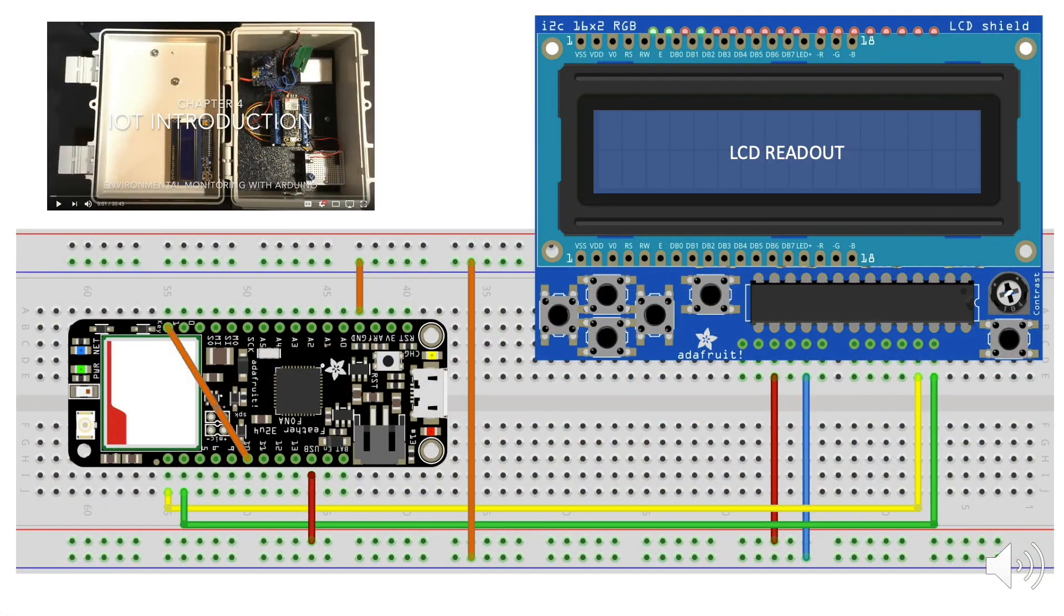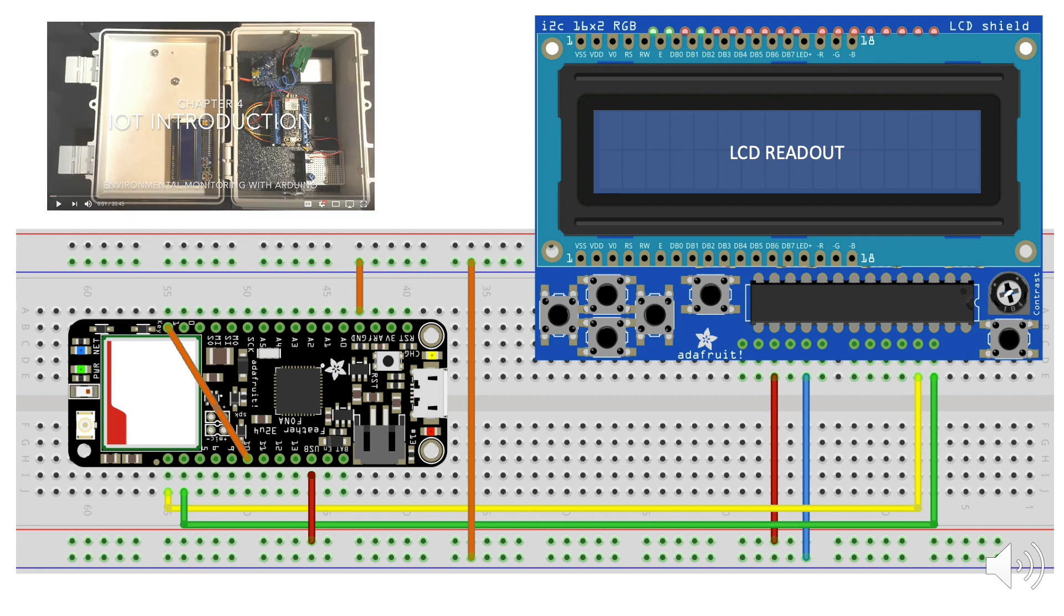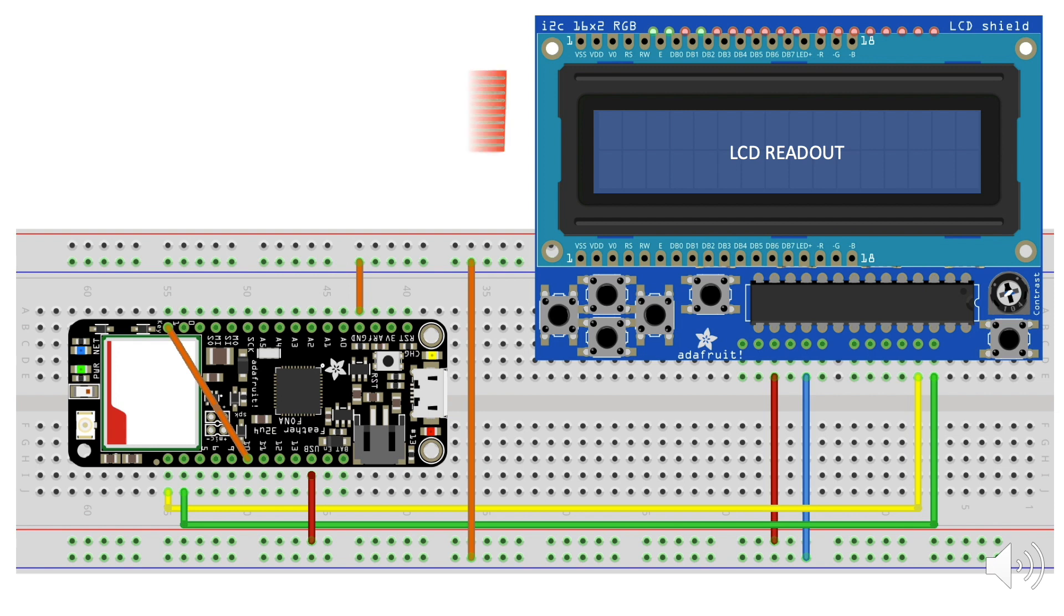With respect to our hardware, we'll start with the circuit prepared for our introduction to the Internet of Things video. I won't dive too deep into this circuit, since it and the supporting code were covered in that video. We'll then amend it with the sensor we just described. The sensor will be powered off the power rail of your protoboard, or breadboard, with its signal pin attached to pin A0 on the Fona.